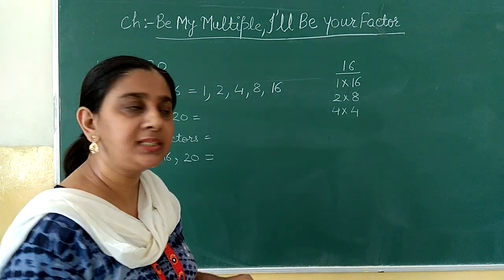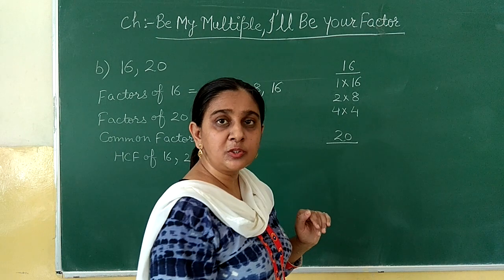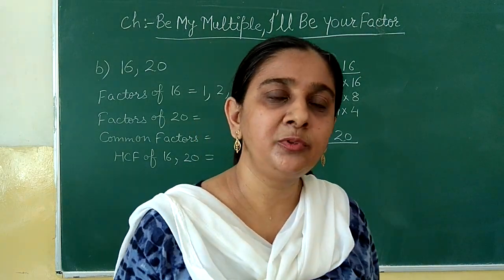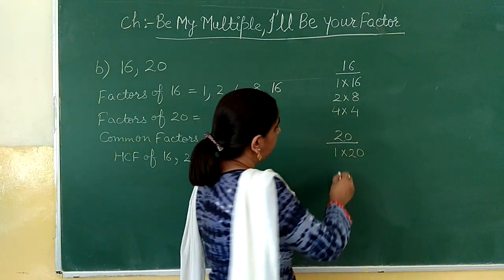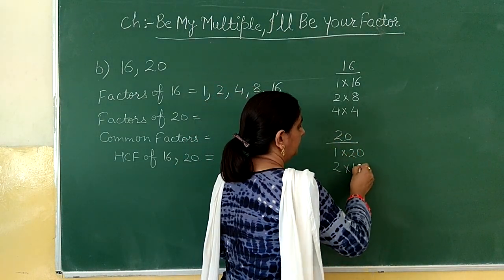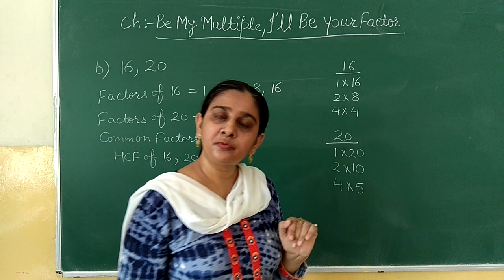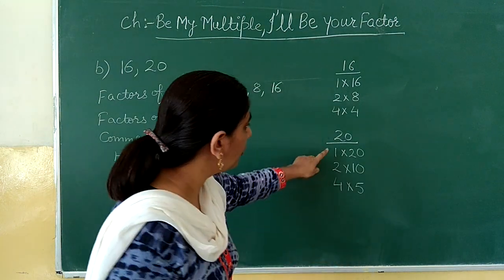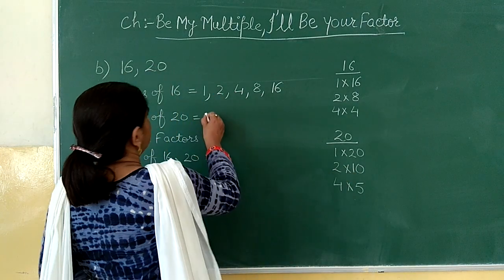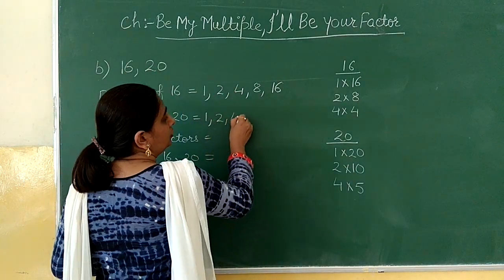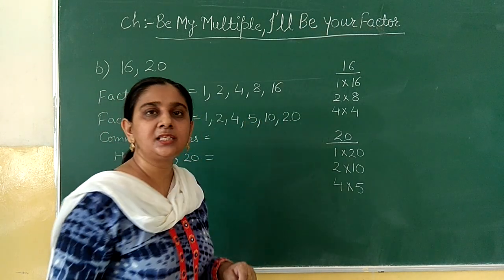Now we will write the factors of twenty. We will write all those pairs of numbers whose product gives you twenty: one times twenty, two times ten, four times five. So the factors of twenty are one, two, four, five, ten and twenty.